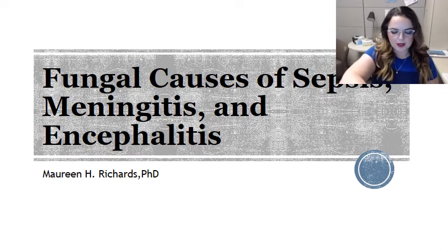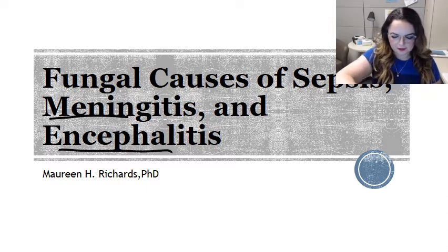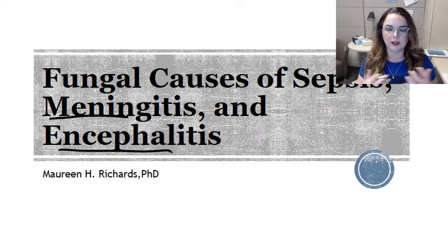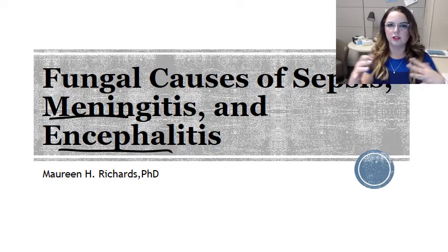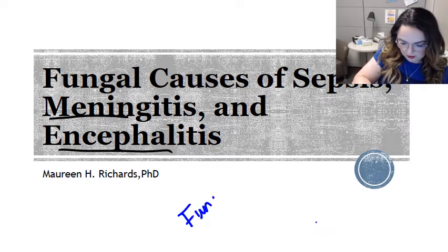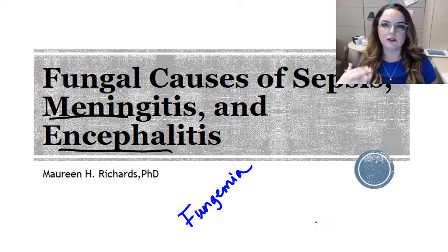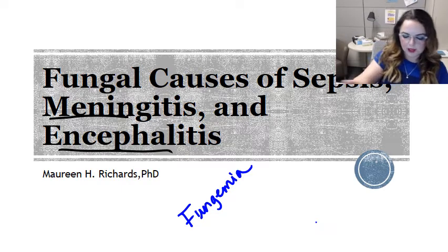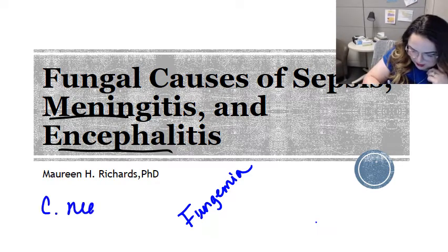We're listing this as meningitis and encephalitis, but that's not truly the whole story, because we also see abscess formation in the brain as a result of fungus. Typically when we see fungal infections in the brain, it's really the result of fungemia — fungi that have escaped from wherever the initial infection was and passed through the bloodstream. This video is really going to focus at the end on Cryptococcus neoformans.